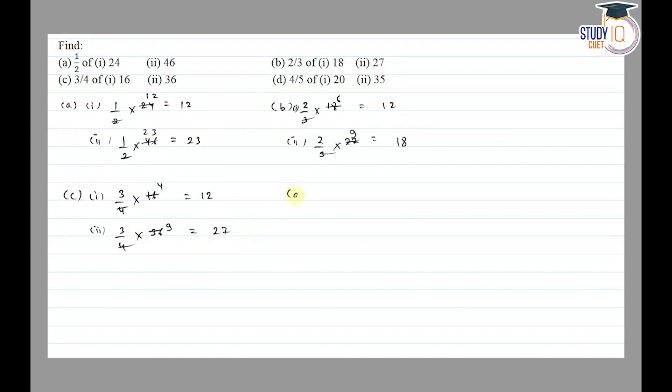Then part (d): 4/5 of 20. So 5 goes into 20 four times, so 4 times 4 equals 16. And second, 4/5 of 35. 5 goes into 35 seven times, so 7 times 4 equals 28. Thank you.